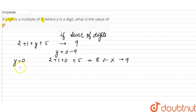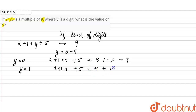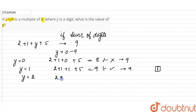Now when y is equal to 1: 2 plus 1 plus 1 plus 5 equals 9. Since 9 is divisible by 9, y equal to 1 can be the value of y. When y is equal to 2: 2 plus 1 plus 2 plus 5 equals 10, and 10 is not divisible by 9.